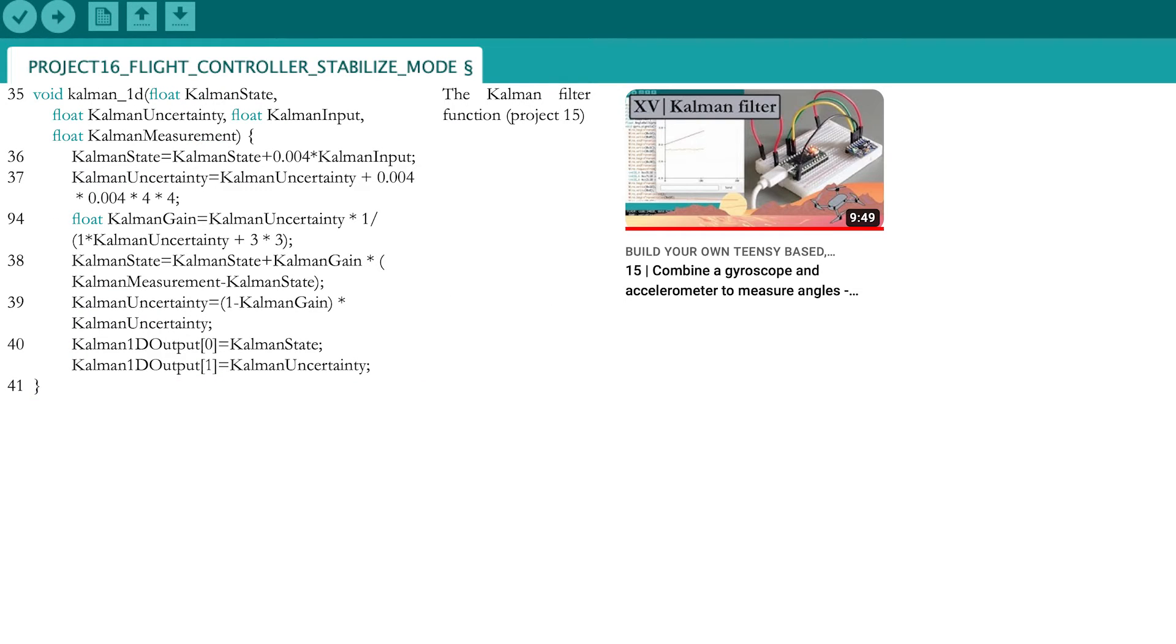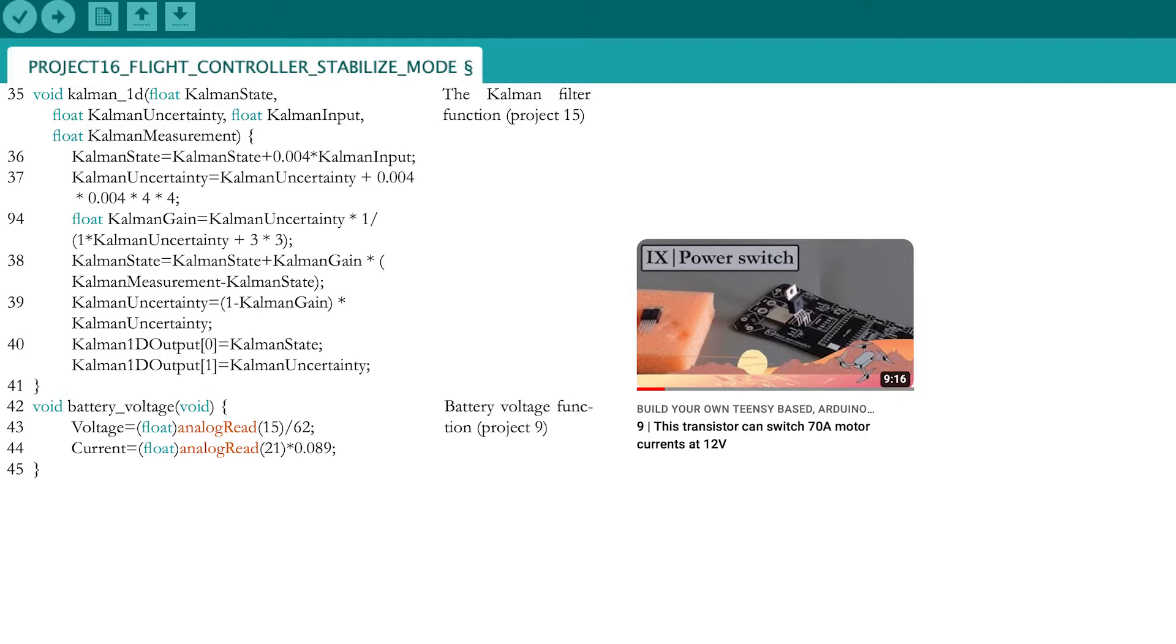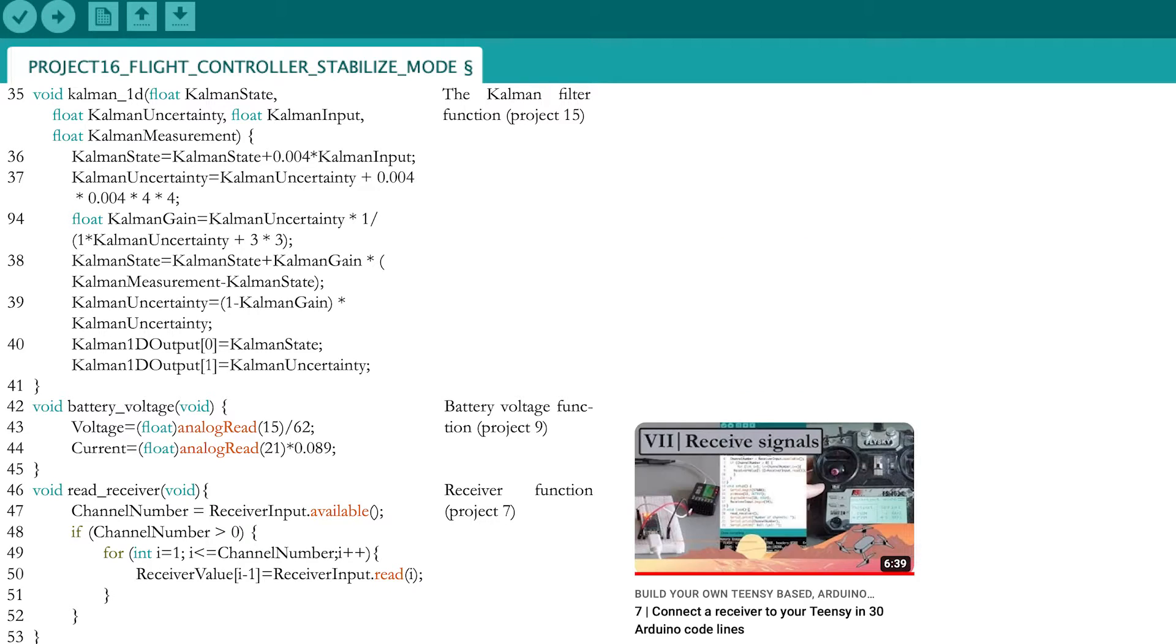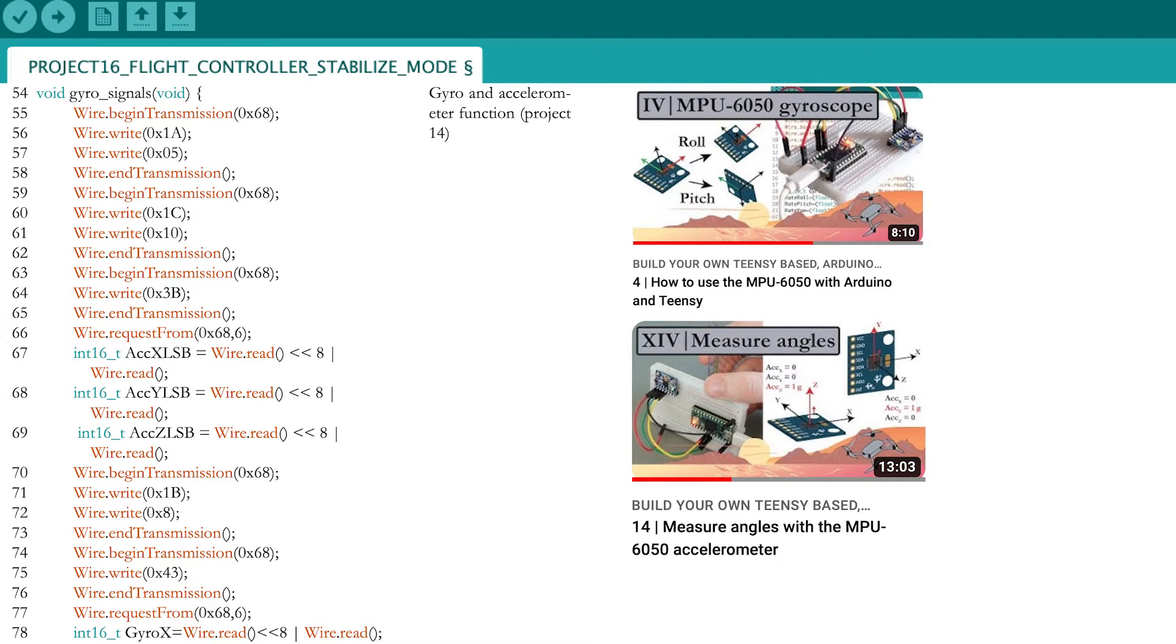Now copy the Kalman function from part 15, the battery voltage function from part 9, and the receiver function from part 7. The gyro and accelerometer functions come from parts 4 and 14.